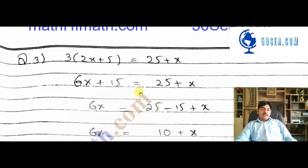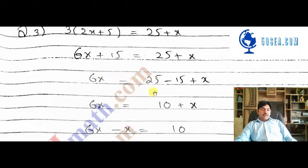After this, we will move the constant to this side. So 6x plus 15 equals 25 plus x. Now 25 minus 15 equals 10, so we have 6x equals 10 plus x.